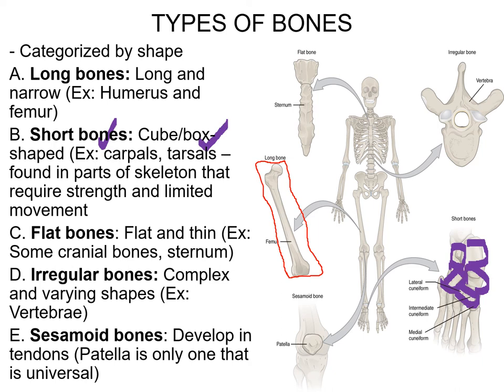Our next category is flat bones. Flat bones are just flat — pretty thin. You find them in a few areas. Number one is your breastbone, your sternum. A lot of the bones on the outside of your skull that make up the skull cavity, such as the frontal bone and the parietal bone, are great examples of flat bones. Irregular bones are just what it sounds like — they're irregular, they're weird, and they don't really fit into these first three categories. They're not long, not really short, and definitely not flat.